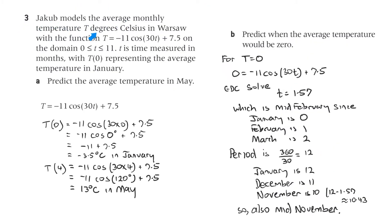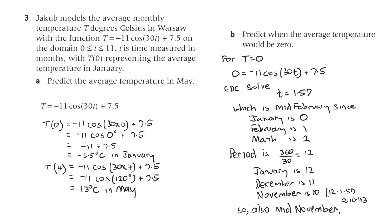Question 3. Jakub models the average monthly temperature T degrees Celsius in Warsaw with the function T equals minus 11 cosine 30T plus 7.5, on the domain 0 ≤ T ≤ 11, where T is time in months and T equals 0 represents January. Predict the average temperature in May. T(0) equals minus 11 cosine 0 plus 7.5, which is minus 11 plus 7.5, giving minus 3.5 degrees Celsius in January. May is T equals 4 months, so that's minus 11 cosine 120 degrees plus 7.5, which gives 13 degrees Celsius in May.